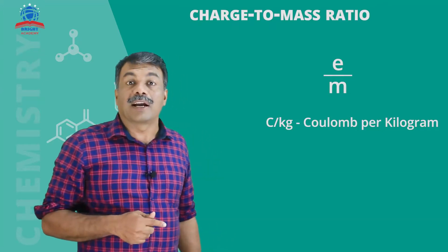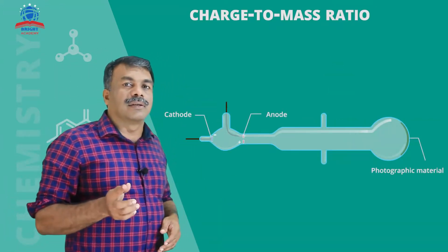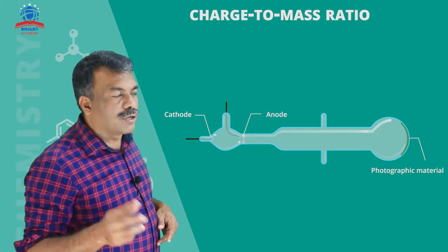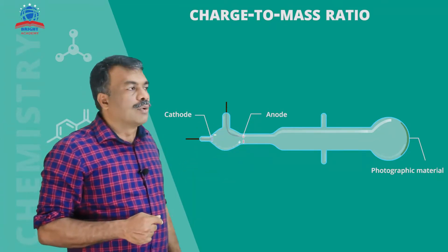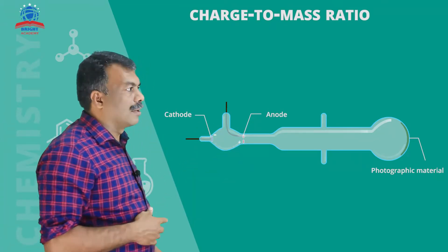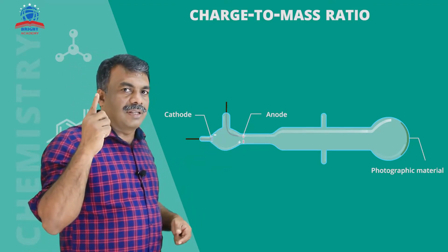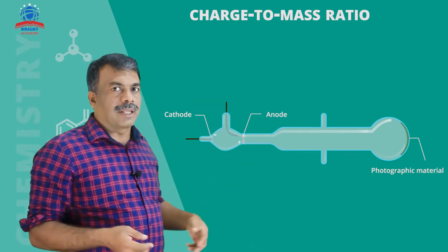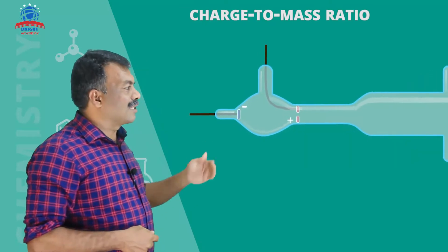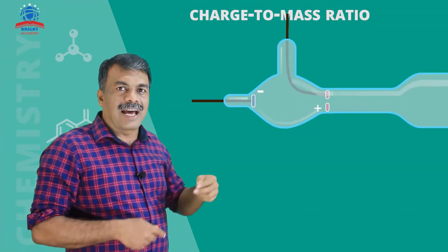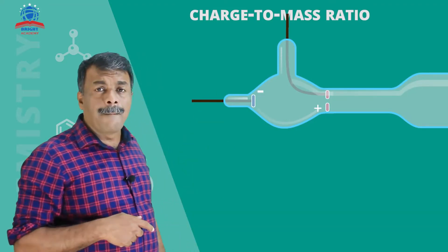If you look at this familiar discharge tube — the discharge tube we already discussed — you know that two electrodes are at both ends. The cathode is here and the anode is there. And in the anode there is a hole.